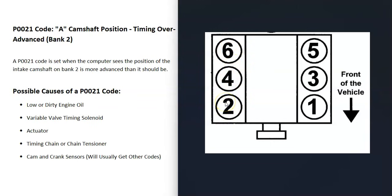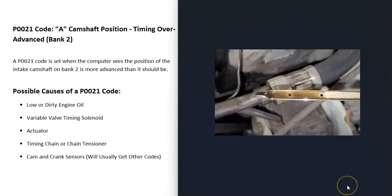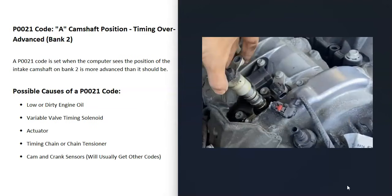The first thing to check is your engine oil — make sure it's not low or really dirty. Engines with variable valve timing have oil flowing through them, and if the engine oil is really low or really dirty it could clog things up and cause issues. So the first thing to check is your engine oil.